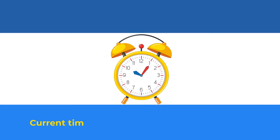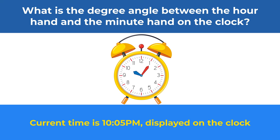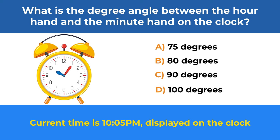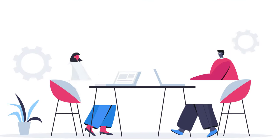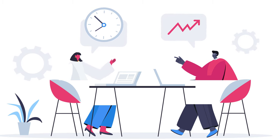Here's a frequently used question on the test which may not be as simple as it looks. The current time on the clock is 10:05 PM. What is the degree angle between the hour hand and the minute hand? You have four choices: choice A, 75 degrees; choice B, 80 degrees; choice C, 90 degrees; choice D, 100 degrees. Give yourself a little time and look carefully.